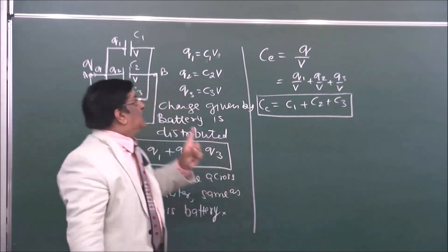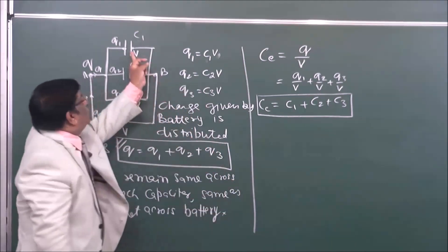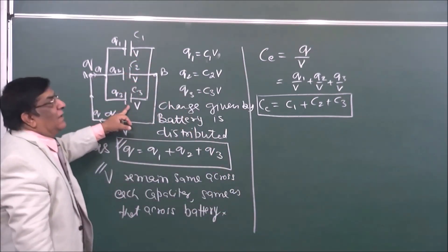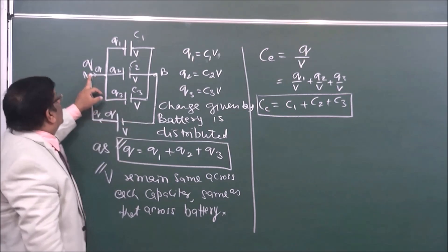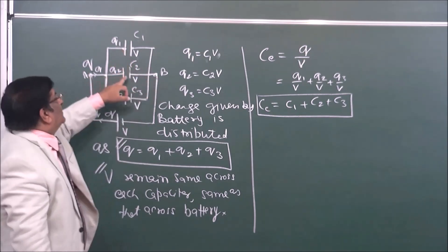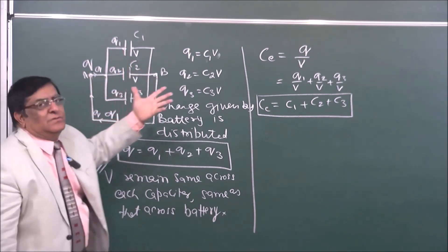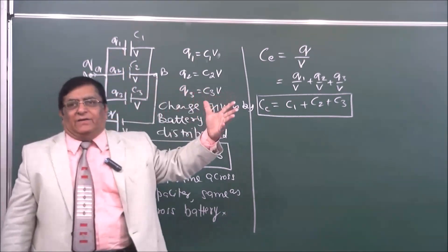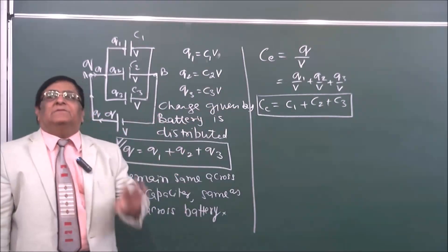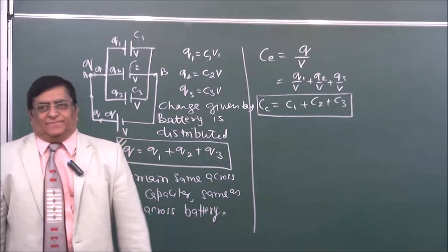If the capacitances are 2, 3, and 4, then the equivalent capacitance between A and B is 2 plus 3 plus 4, which equals 9. So 9 is the equivalent capacitance. So easy.